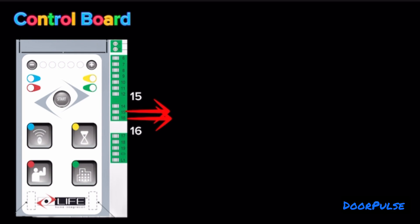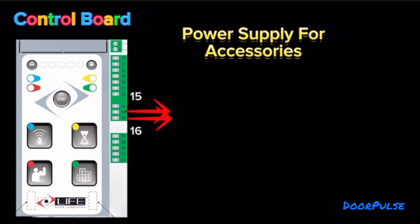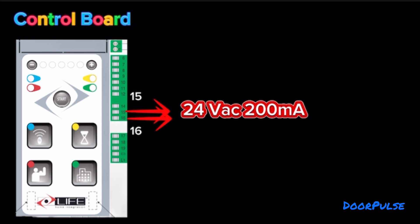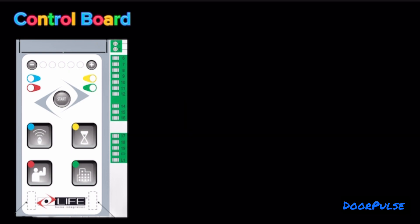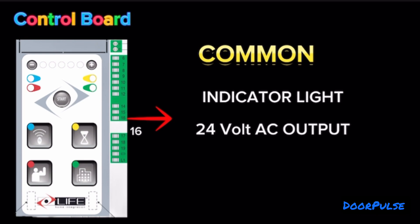Terminals 16 and 15: 24 Volt AC output for powering various devices, 200 mA Max. Terminal 16 is common indicator light 24 Volt AC output.